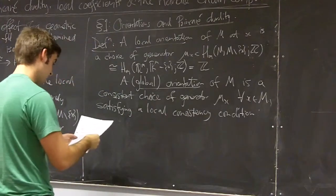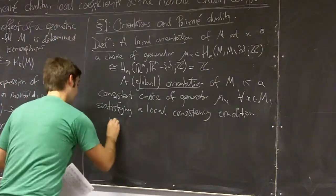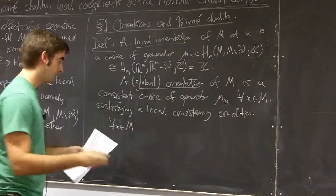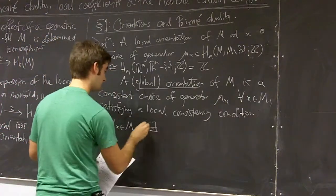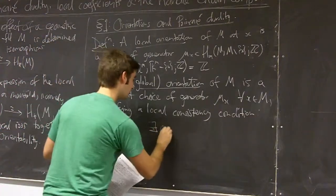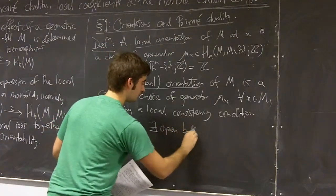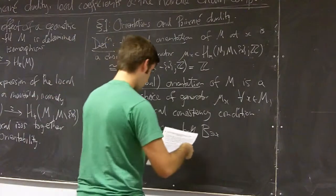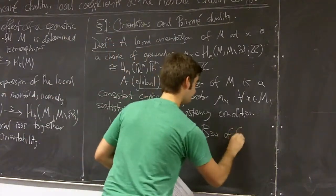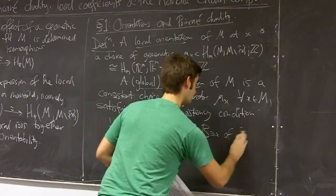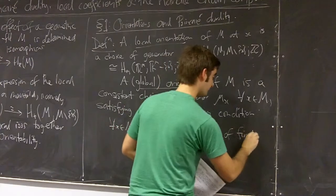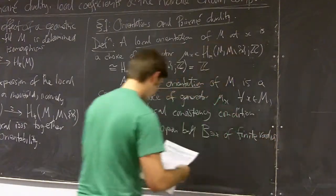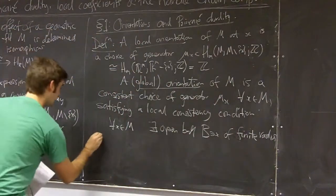So it has to satisfy a local consistency condition. That condition being so around any point in our manifold there exists an open ball say B containing x of finite radius such that